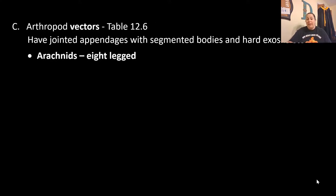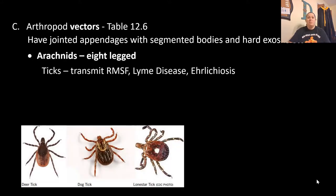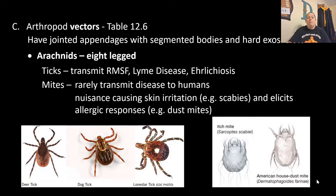Arthropods have jointed appendages with segmented bodies and a hard exoskeleton. Arachnids have eight legs — spiders, ticks, and scorpions — and ticks can be vectors transmitting Rocky Mountain spotted fever, Lyme disease, and anaplasmosis. Mites rarely transmit disease to humans but are a nuisance, causing skin irritations known as scabies, and can elicit allergic reactions — an example being dust mites.